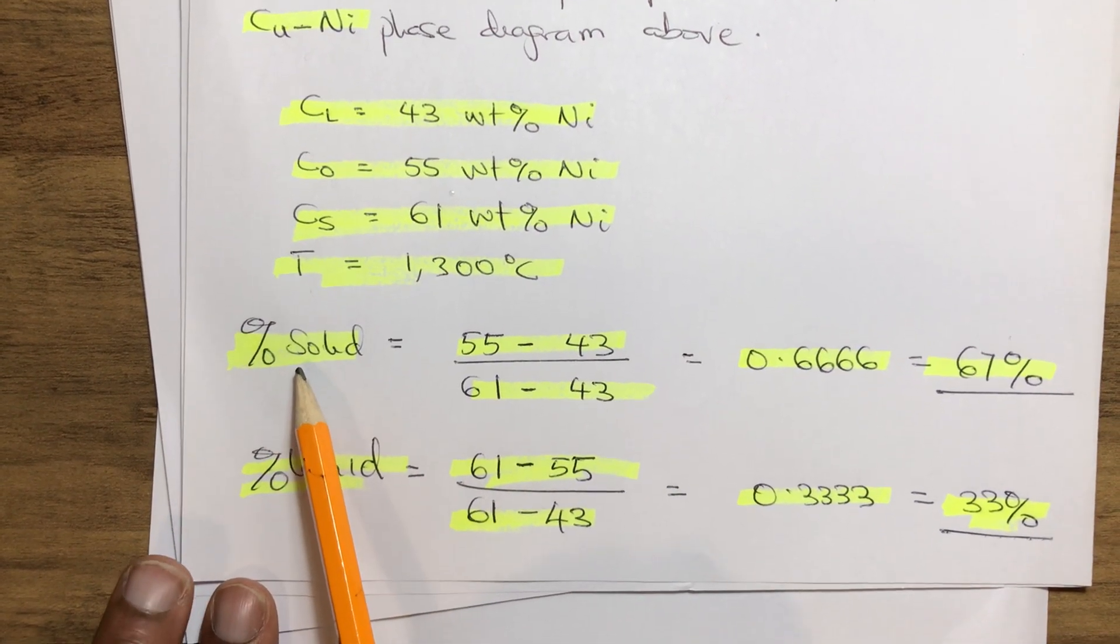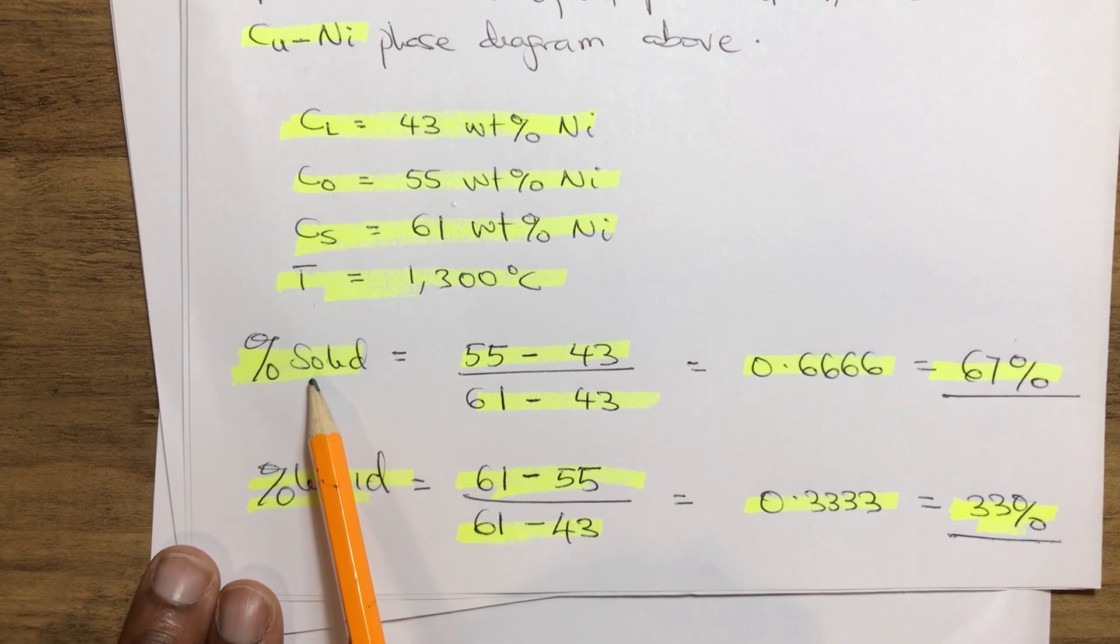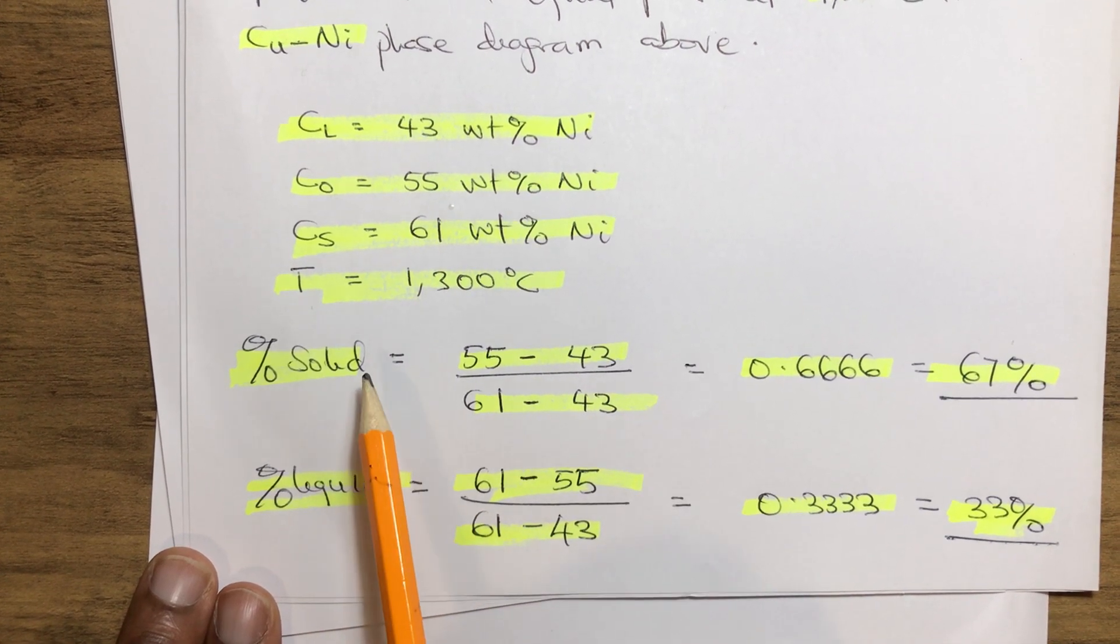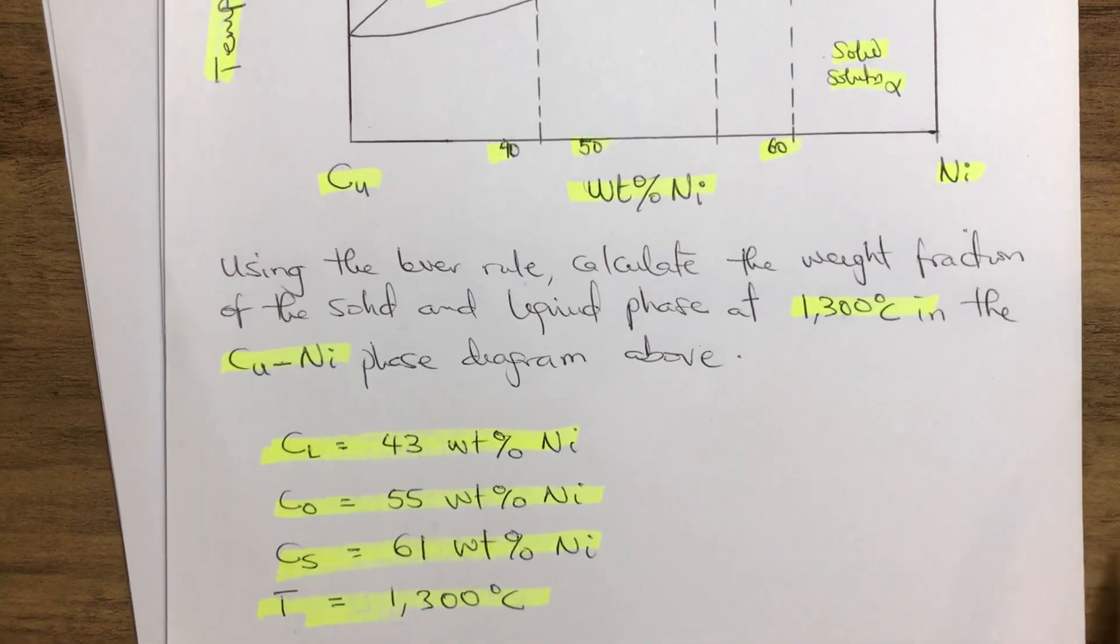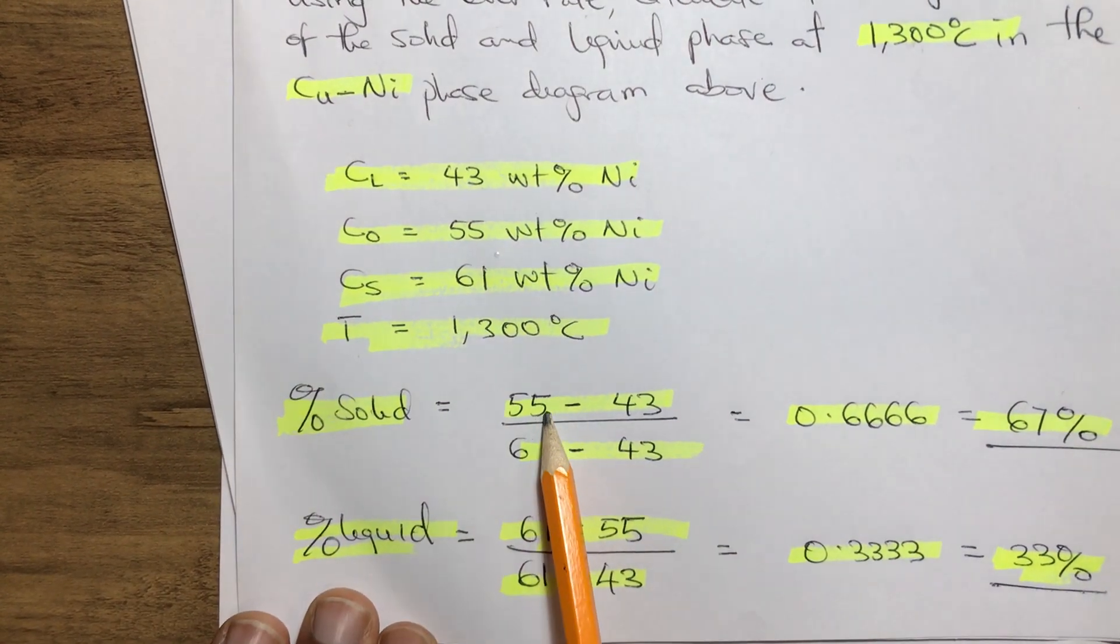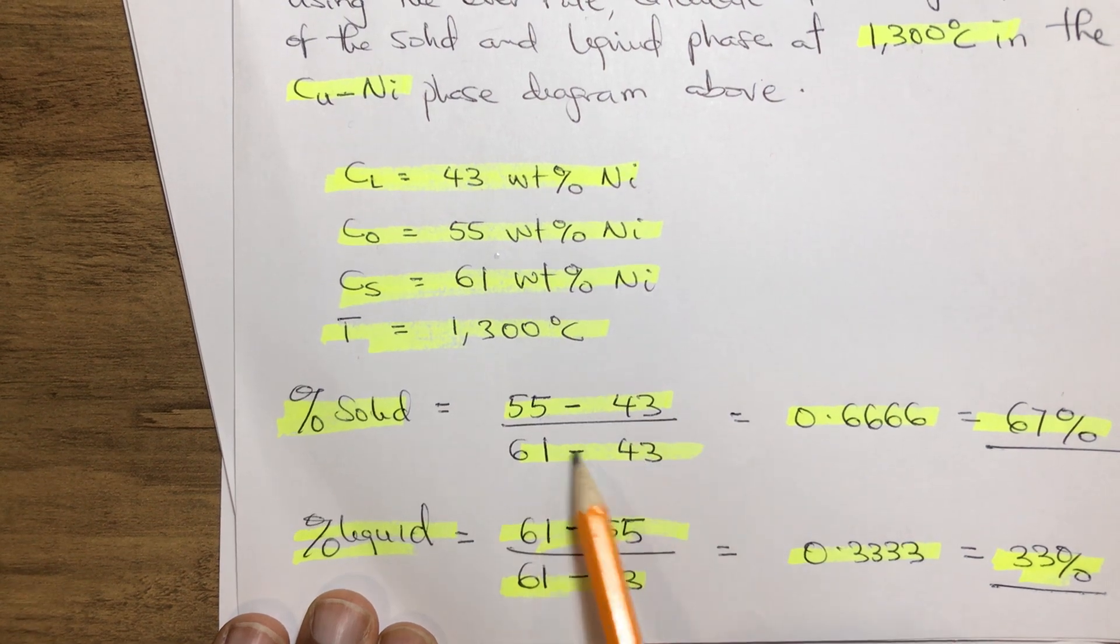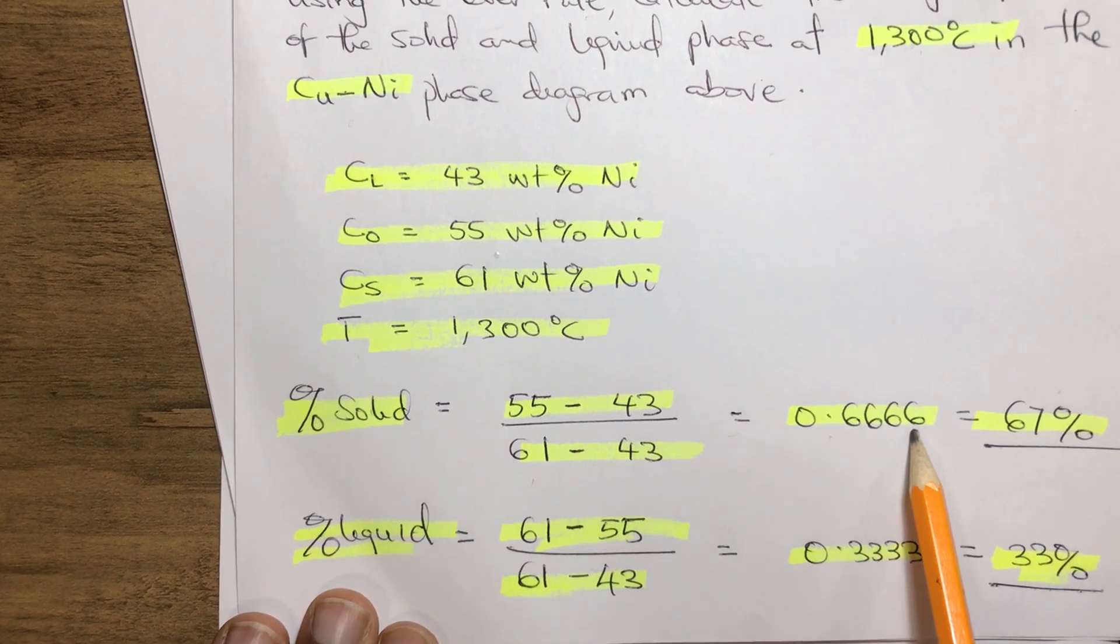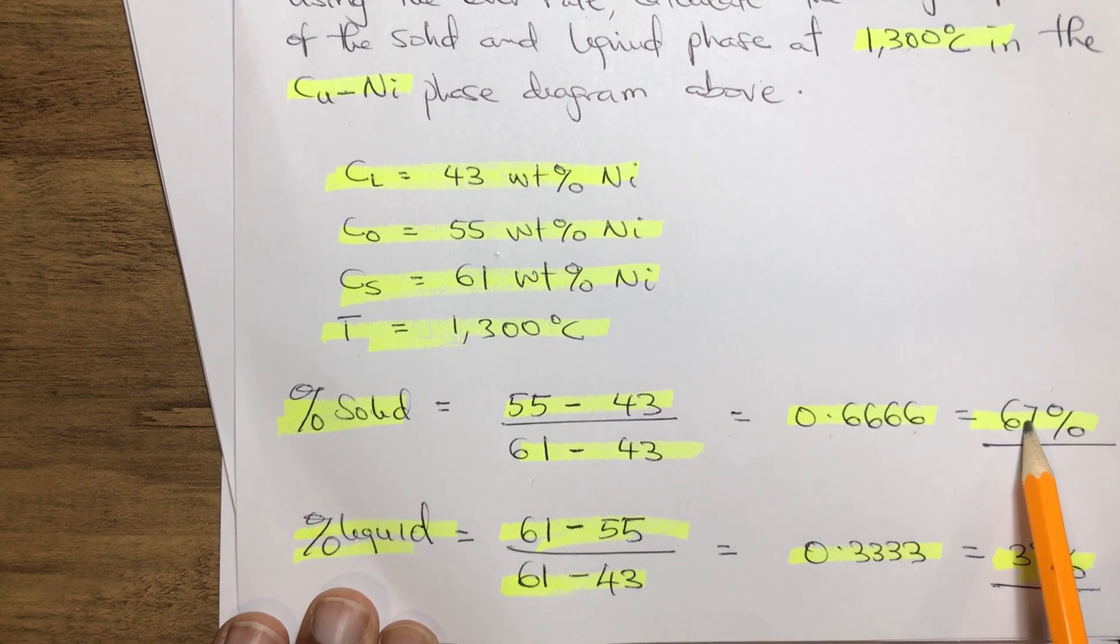To find the solid percentage weight of the nickel-copper phase, we use the lever rule by calculating: (55 - 43) / (61 - 43), which gives us 0.6666, which equals 67 percent.